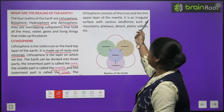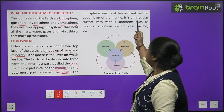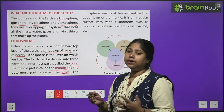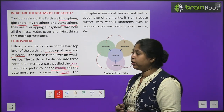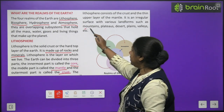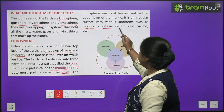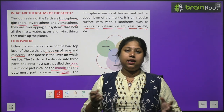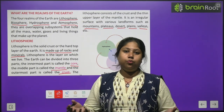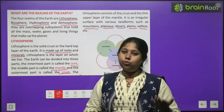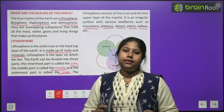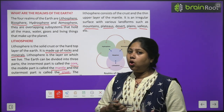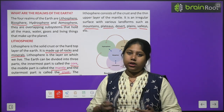Lithosphere consists of the crust and the thin upper layer of the mantle. It is an irregular surface with various landforms. On the crust we find mountains, plateaus, deserts, plains, and valleys. The Earth's surface is not uniform everywhere — some places are high, some are low, some are rough, some are smooth — depending on the rocks available in that particular area.